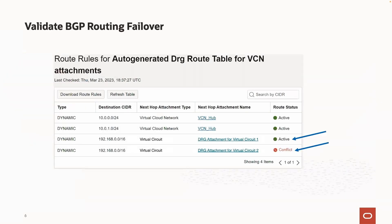So far, we have discussed what to look for when validating you have physical redundancy with your FastConnects inside OCI. Even if you have validated proper physical redundancy, failover may still not happen if your routing is not configured correctly. To validate that routing is set up correctly, you will want to go to your DRG route tables and look at the DRG route table associated with your VCN attachments and click on the Get All Route Rules button. This will show you the routes that the DRG is learning over BGP on the different FastConnects. Here is an example that shows we are receiving the same route for 192.168.0.0/16 over two separate FastConnect virtual circuits — one is green and active and the other is red and conflict. This validates that if virtual circuit one were to go down, the same route over virtual circuit two will go from conflict to active and traffic will failover.